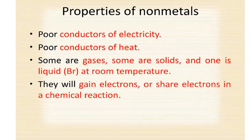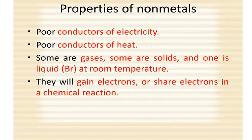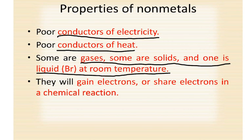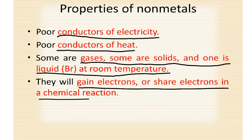Now let's look at nonmetals. Nonmetals are the opposite of metals — they are poor conductors of electricity and poor conductors of heat. Some are gases, some are solids, and one is a liquid at room temperature, so they cover all three states. Whereas you won't find a single metal that's a gas — there is one metal that's a liquid, and that's mercury; all the rest are solid. Nonmetals will gain electrons or share electrons in a chemical reaction.